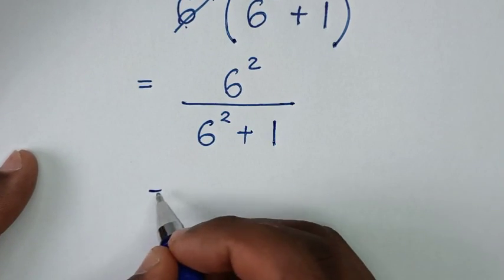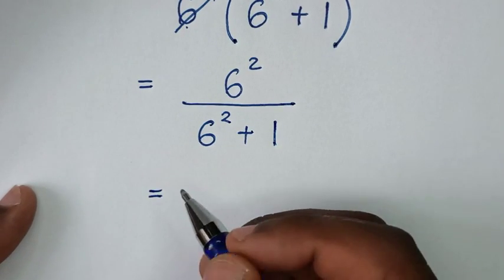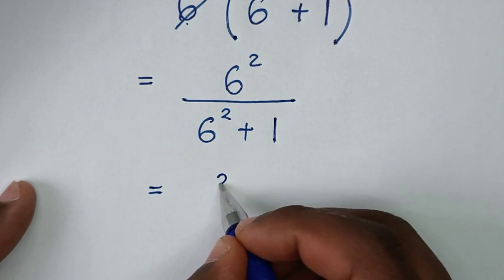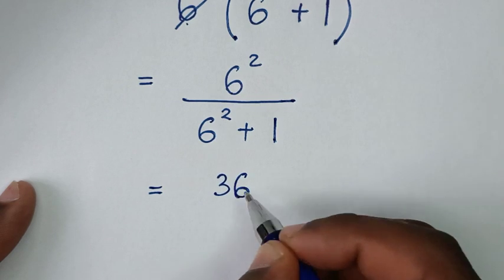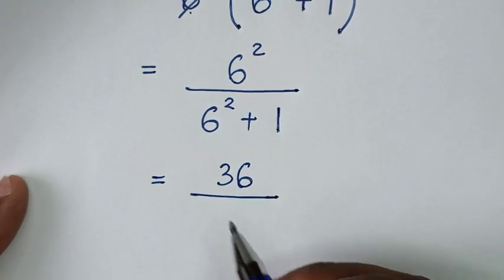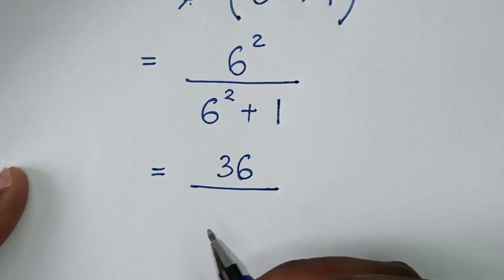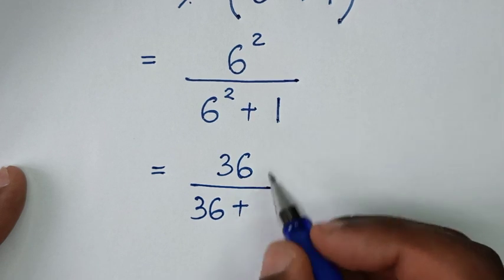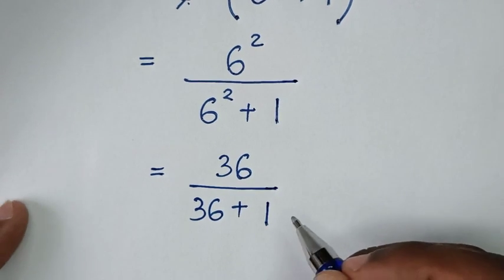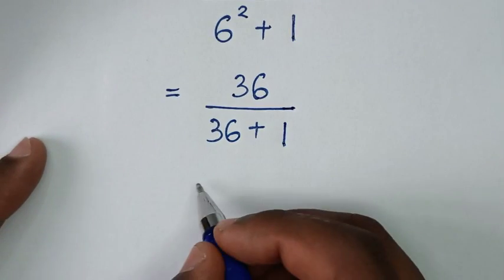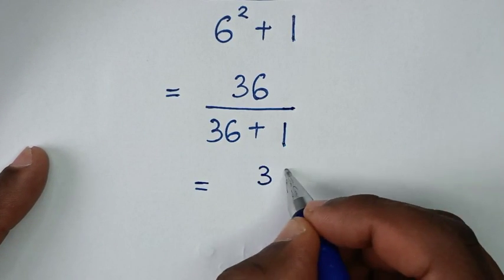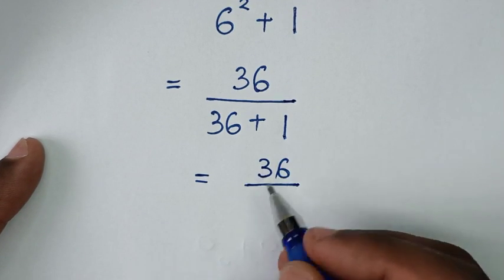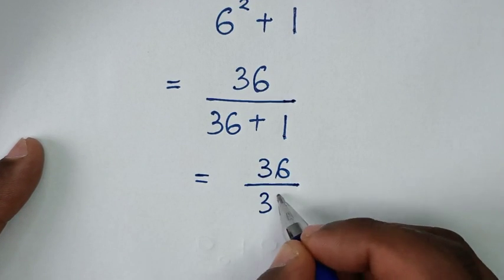In the next step, it will be equal to: 6 power 2 is 36, then over 6 power 4 is 36 plus this 1. So it will be equal to 36 over 36 plus 1, which is 37.